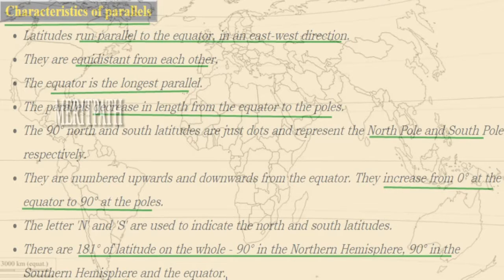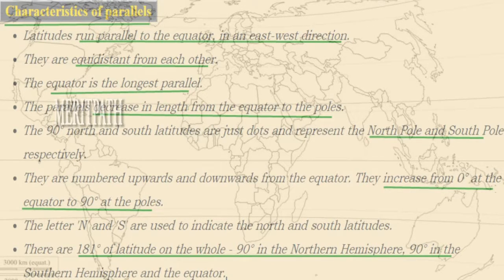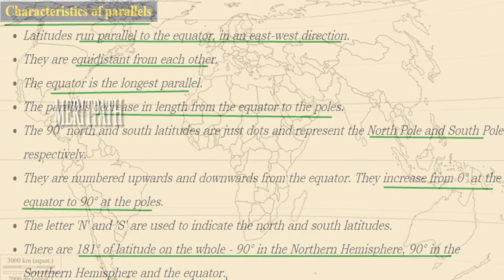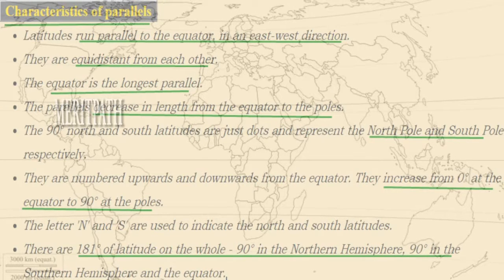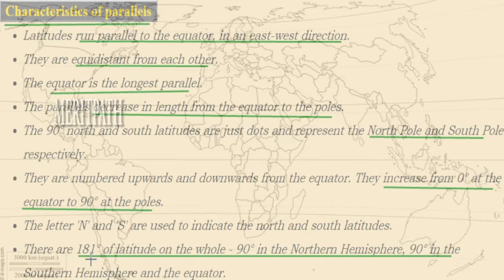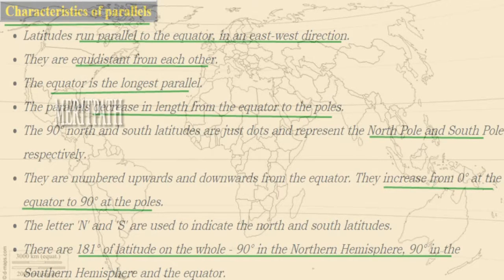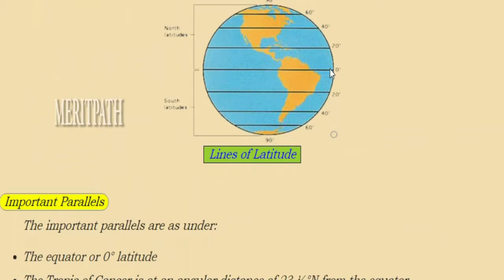In total, there are 181 degrees of latitude: 90 degrees in the Northern Hemisphere, 90 degrees in the Southern Hemisphere, and one line for the equator, making 181 degrees in all. From the equator at 0 degrees, latitudes increase to 90 degrees toward the North Pole and also increase to 90 degrees toward the South Pole, forming northern latitudes and southern latitudes respectively.